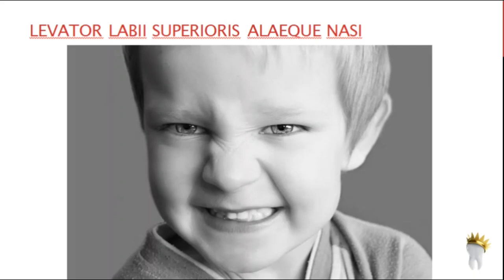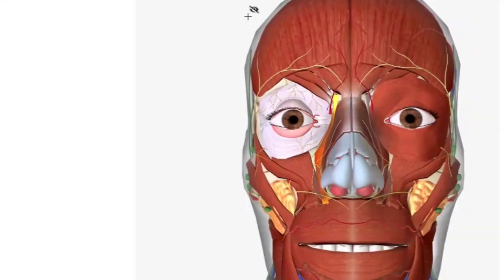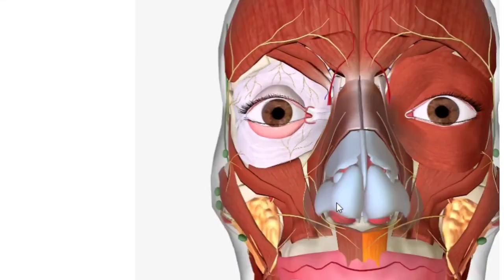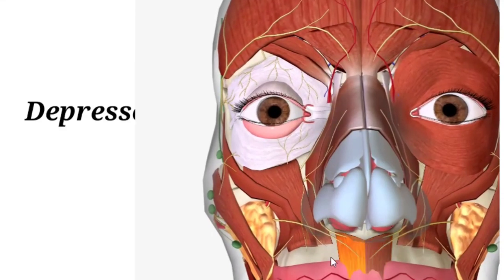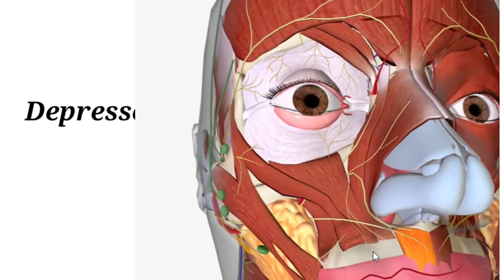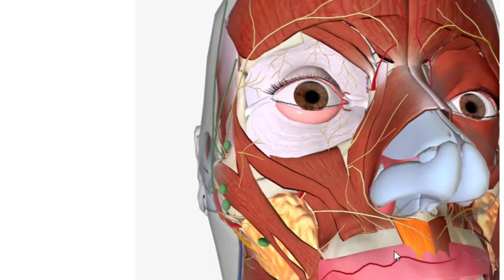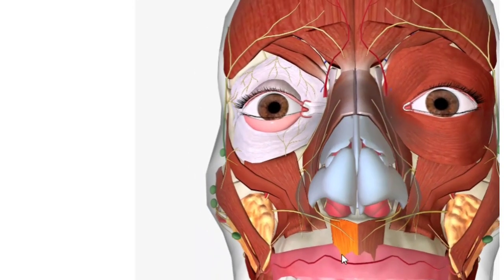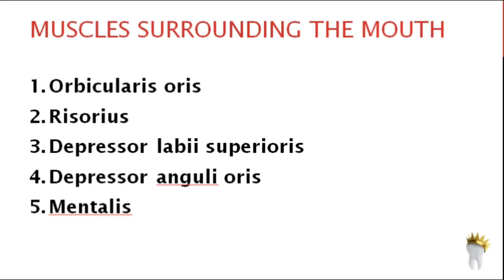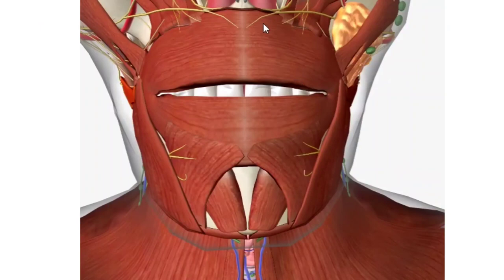Depressor septi arises from the incisive fossa of the maxilla and inserts into the nasal septum and the posterior aspect of the alar part of the nasalis muscle. As the name suggests, it depresses the nasal septum and pulls the sides of the nose downwards, constricting the aperture of the nose. Now let's talk about the muscles surrounding the mouth.